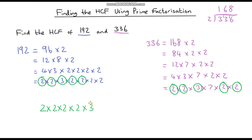Do they have any other prime factors in common? No — 336 has a 7 but 192 doesn't. So both numbers share 2 times 2 times 2 times 2 times 3. Evaluating: 3 times 2 is 6, times 2 is 12, times 2 is 24, times 2 is 48. So the highest common factor is 48.